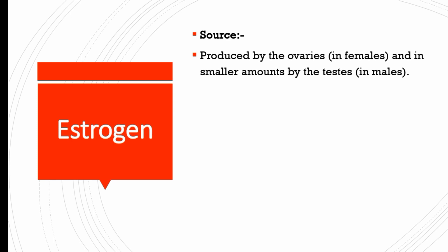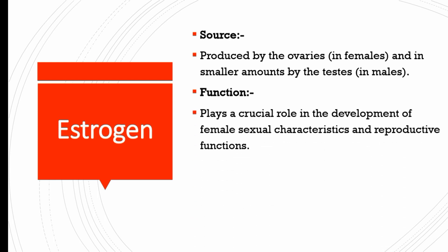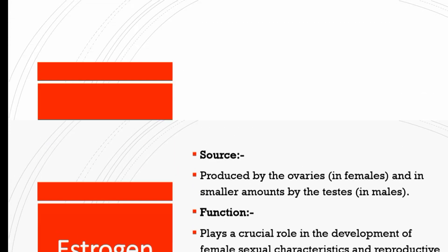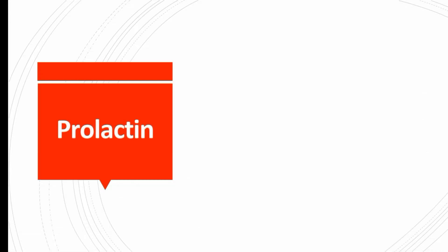Estrogen is produced by the ovaries in females and in smaller amounts by the testes in males. Estrogen plays a crucial role in the development of female sexual characteristics and reproductive function. A deficiency of estrogen causes hormonal imbalance in females, causing menstrual irregularities, fertility issues, and osteoporosis.